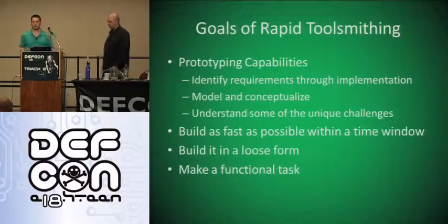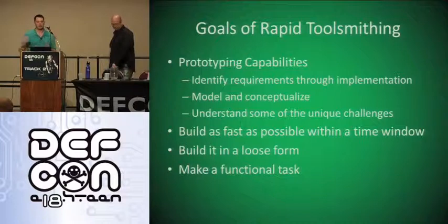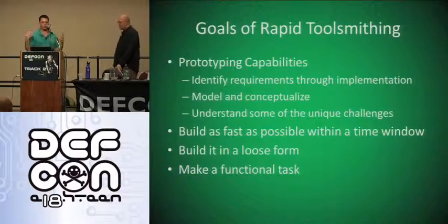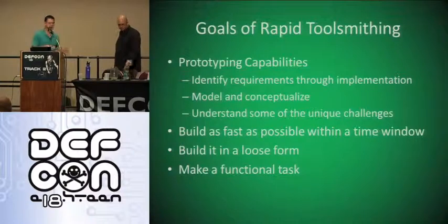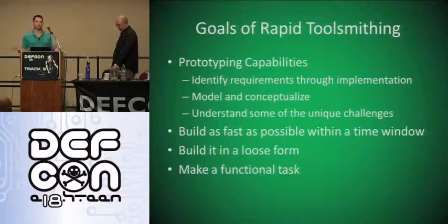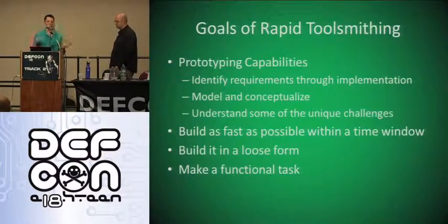So really what we want to talk about is rapid prototyping, especially in timebox windows. When we talk about toolsmithing, we're talking about prototyping capabilities — saying, I'm on a timebox pentest and I need a tool that does X and Y, and I need to model and conceptualize what I'm trying to accomplish. From that model and conceptualization, I'm trying to implement something so I can get something useful out of it. The point is you don't want to spend 16 hours when you only have a week to complete an engagement. The idea is to finish your script or tool in four to five hours and get it to a point where it's working and you can actually apply it.